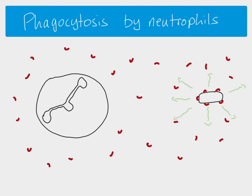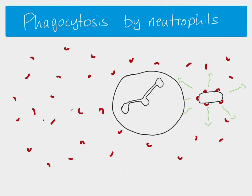Another thing that helps with recognition of the pathogen is that pathogens produce chemical signals. Also, if a pathogen invades a host cell, that host cell sends out histamine — a chemical signal, a bit like a help signal. Pathogens send out chemicals themselves, and we also have complement proteins attached. All of this helps attract our neutrophils, and this process of attraction is called chemotaxis — the movement of the neutrophil towards the pathogen as a result of various chemical stimuli.